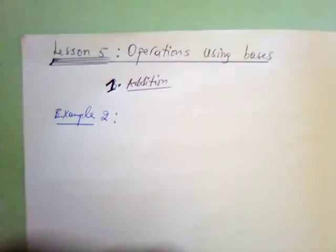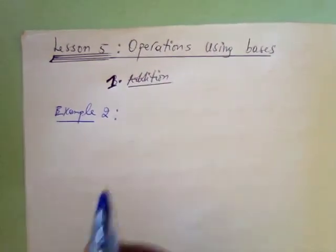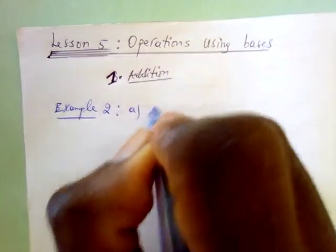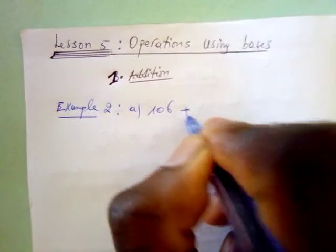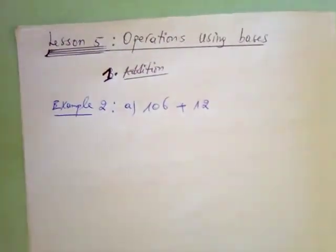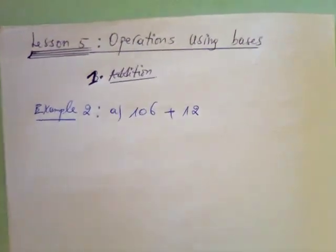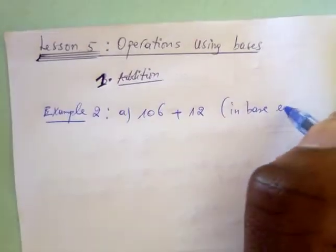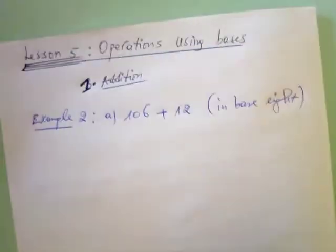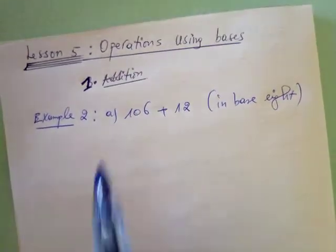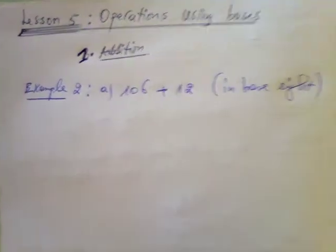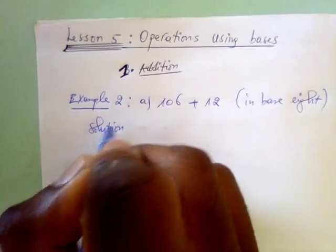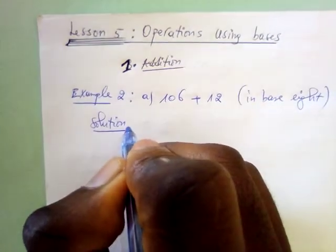In example one, we have to add 106 plus 12, and both are in base eight. This one is in base eight and this one is also in base eight. Now let's find the solution.